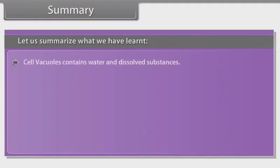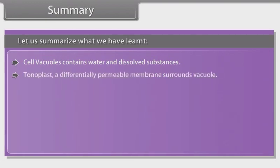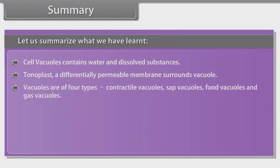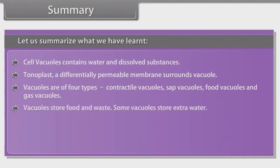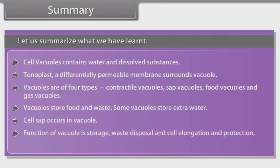Cell vacuoles contain water and dissolved substances. Tonoplast, a differentially permeable membrane, surrounds the vacuole. Vacuoles are of four types: contractile vacuoles, sap vacuoles, food vacuoles and gas vacuoles. Vacuoles store food and waste; some vacuoles store extra water. Cell sap occurs in the vacuole. Functions of vacuole include storage, waste disposal, cell elongation and protection.